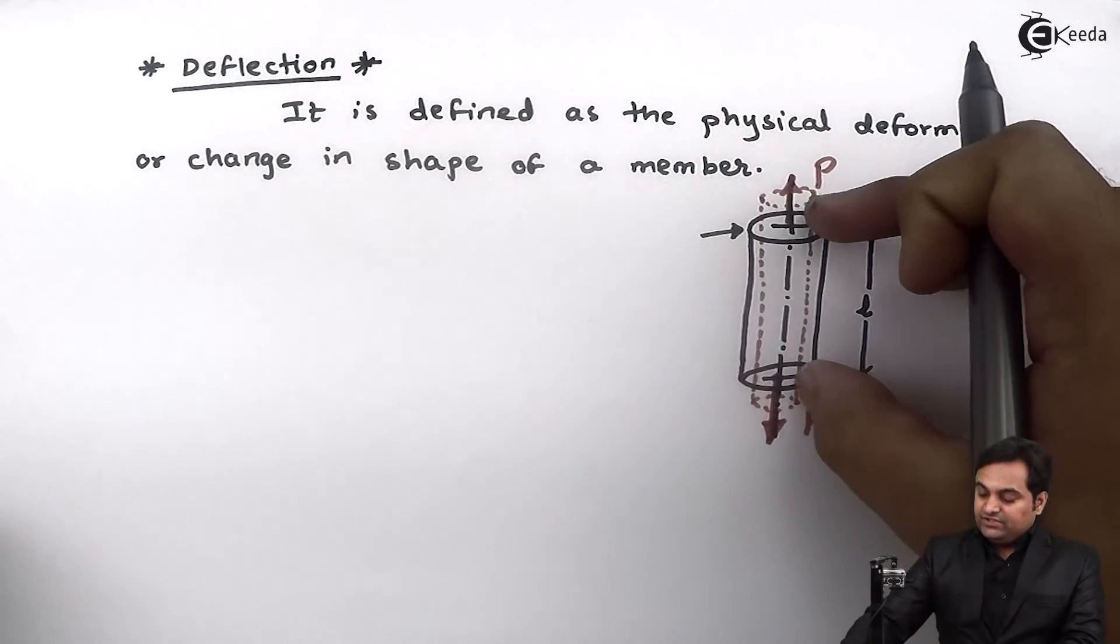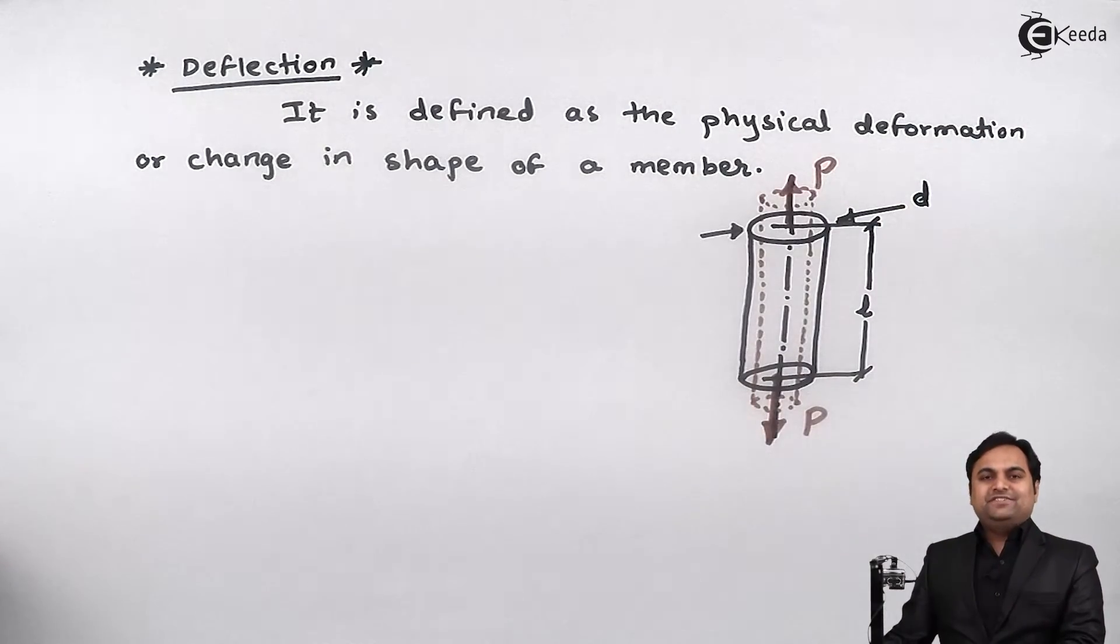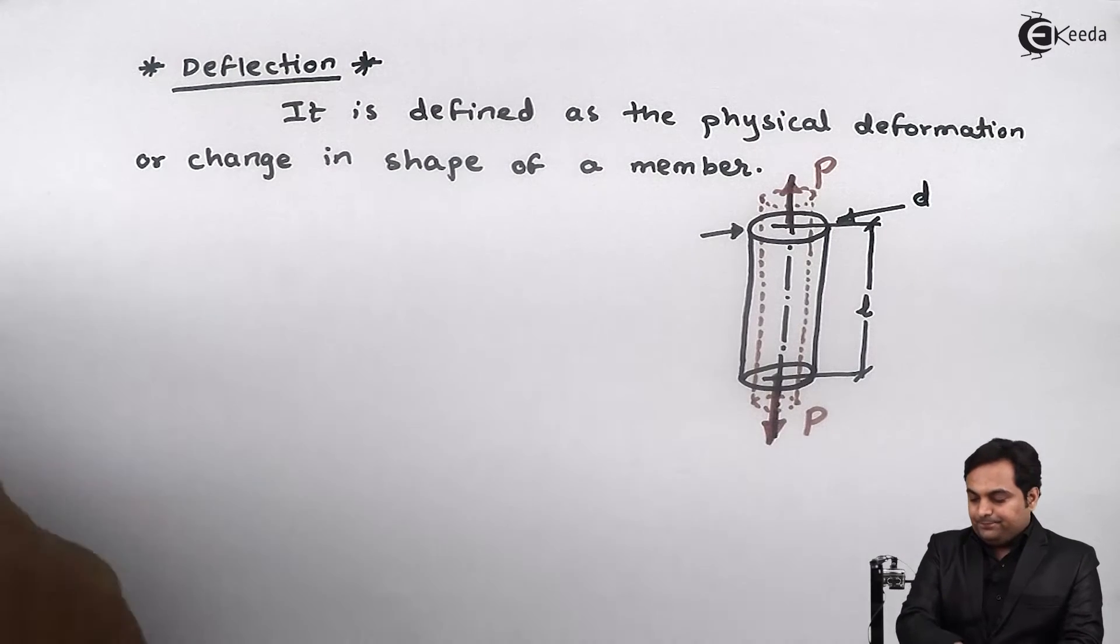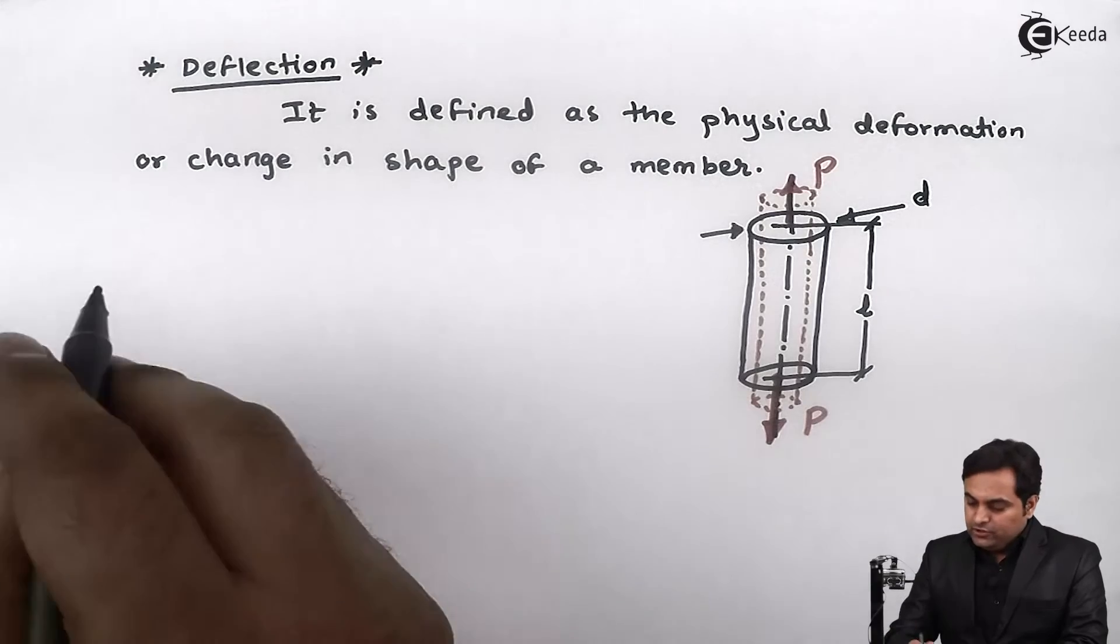So this change in shape is called as deflection and deflection we can get it from the formula of strain. So I will say that mathematically...